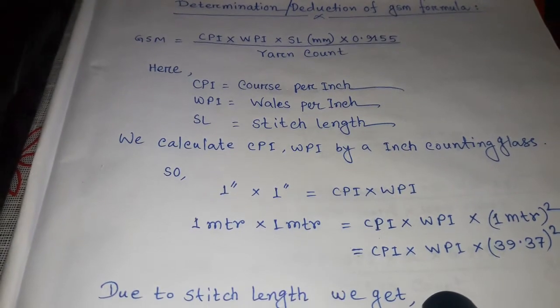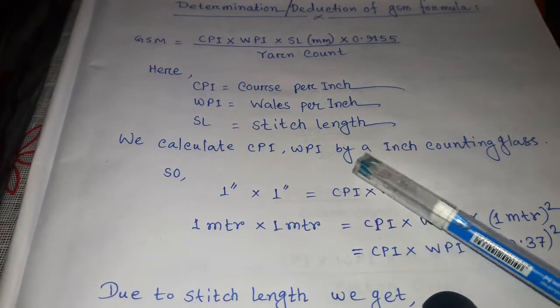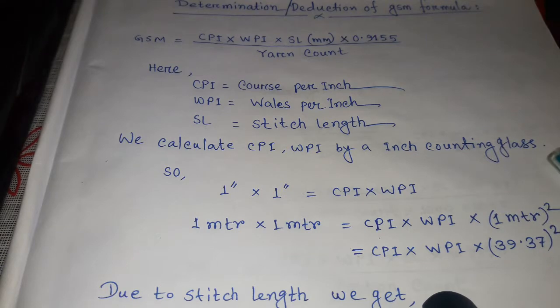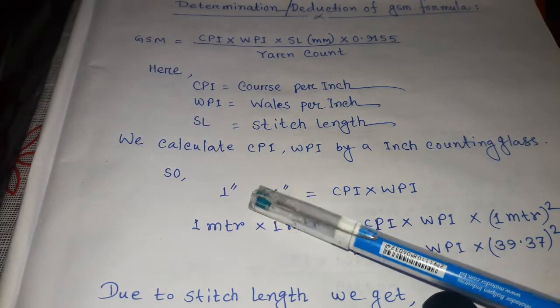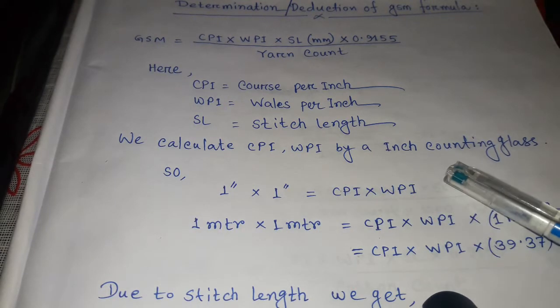We calculate CPI and WPI using a one-inch counting glass. So one inch times one inch equals CPI times WPI.